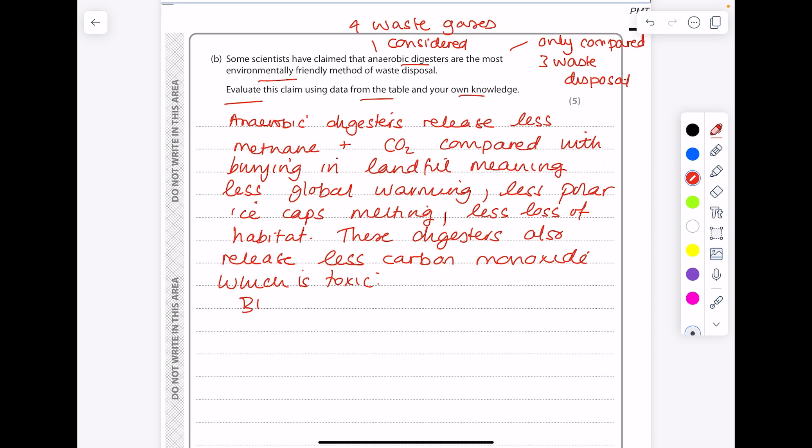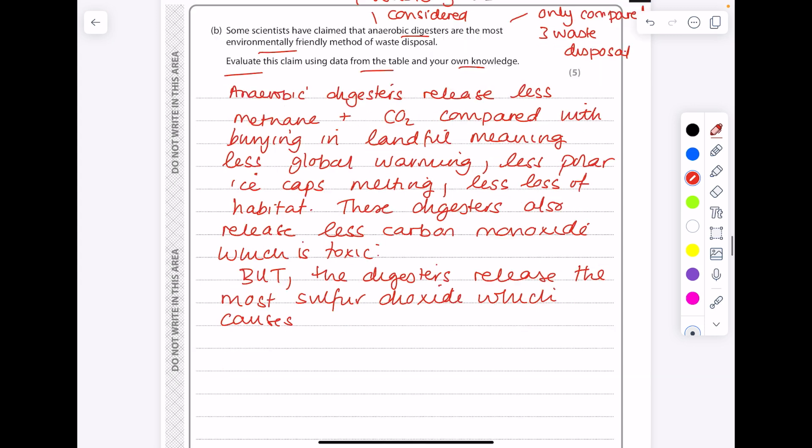But we're evaluating it so we're giving the opposite argument. But the digesters release the most sulfur dioxide which is responsible for causing acid rain, which damages trees and makes lakes too acidic.